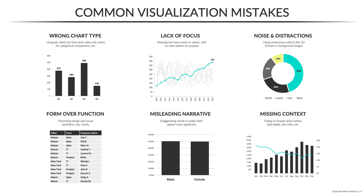And last but not least: missing context. In this case, we have a dual axis chart, but it's impossible to tell what's what. There's no chart title, no legend, no axis labels to help us match each series to the correct values. The obvious fix here is to simply add those chart elements to make sure readers can follow along.